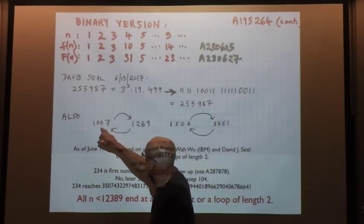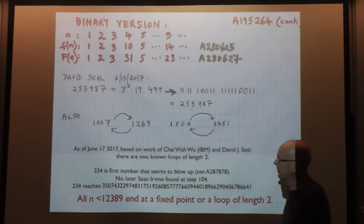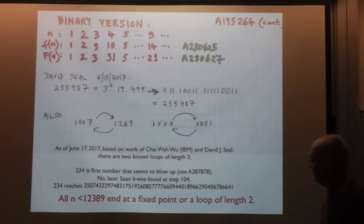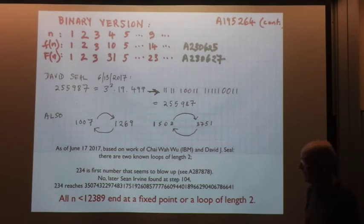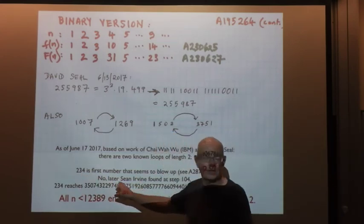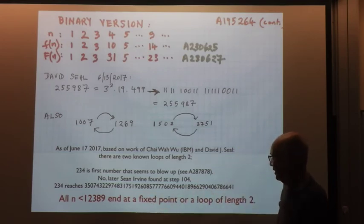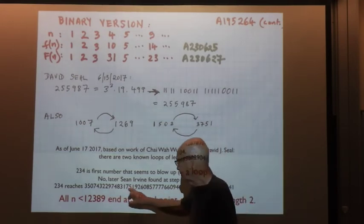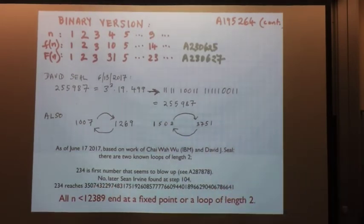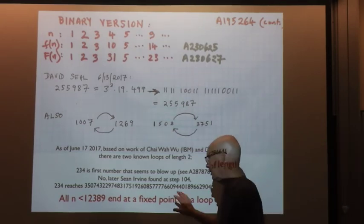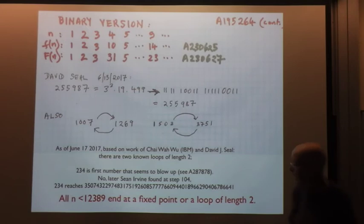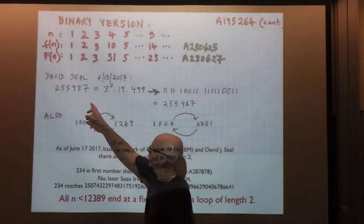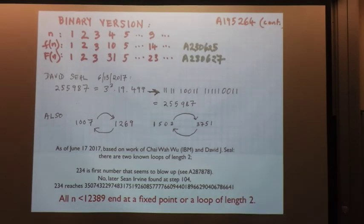But there are also two loops of length 2. Various OEIS contributors — Chang Hua Wu, David Steele, and others — worked on this. It looked like 234 was going to blow up, but after 104 steps Sean found that it reaches a prime, so it stops. As far as we know at the moment, all numbers less than 1239 reach a fixed point — which could be a prime or that number 255987 — or they go into one of these two loops.